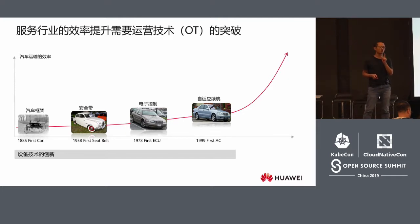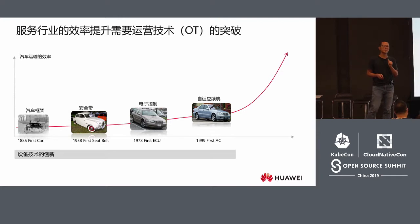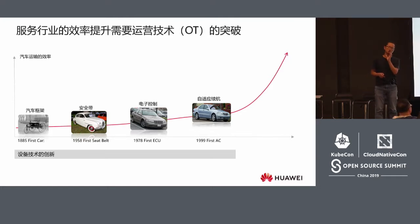If there is a question, please raise your hand anytime — I will give you a book as a present because you are truly interested. ONAP is Open Network Automation Platform. It is an Open Platform for Operation Technology.